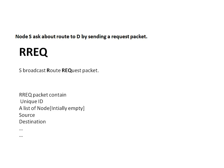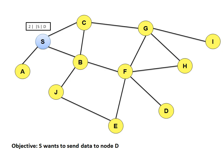The second field is a list of nodes, which contains intermediate node information — the nodes the packet has gone through. The third field is the source address and the fourth is the destination address. These four fields are the most important. Node S will create a Route Request packet: the ID is 2, the second field is empty initially, the third is the source address, and the fourth is the destination address. S will then broadcast this packet.